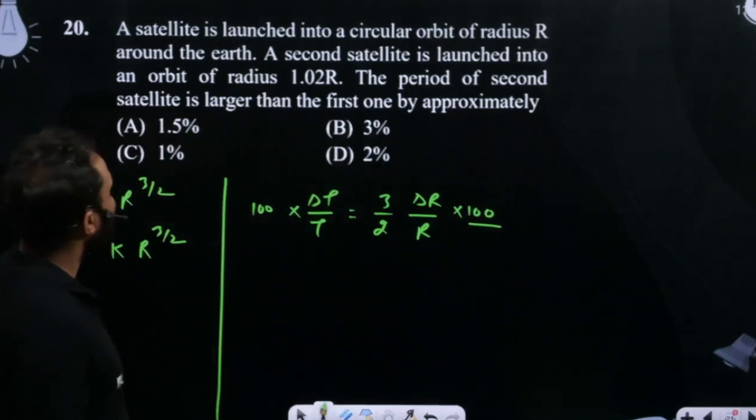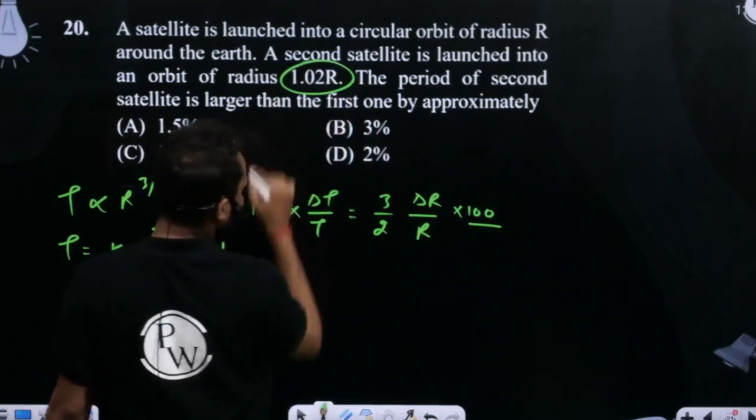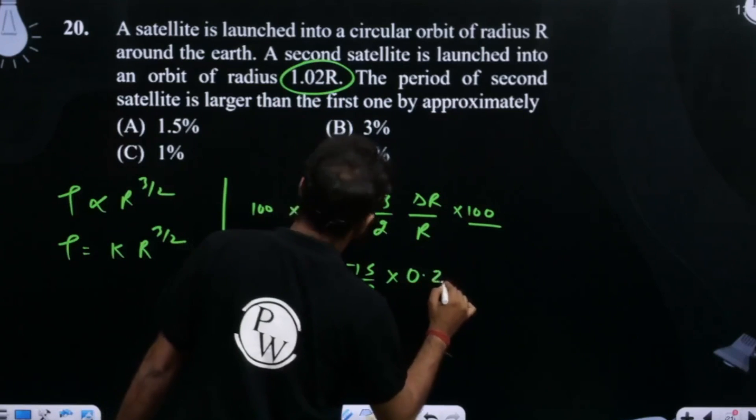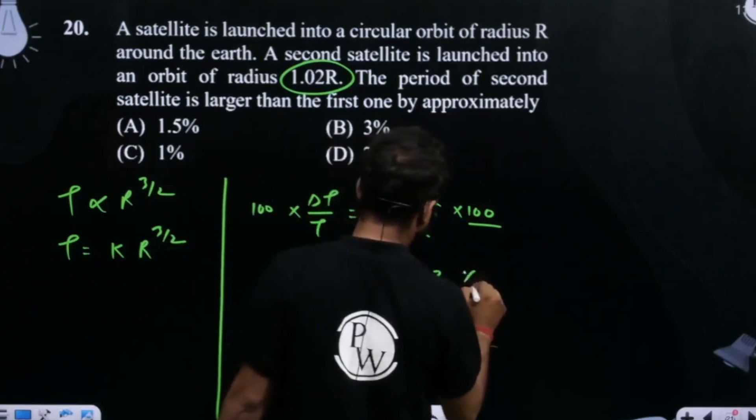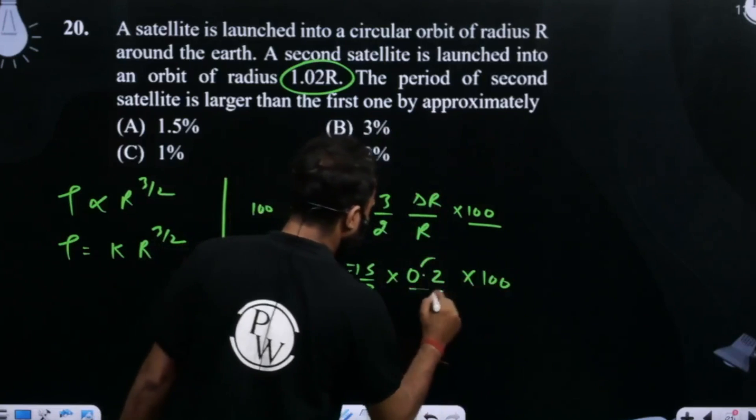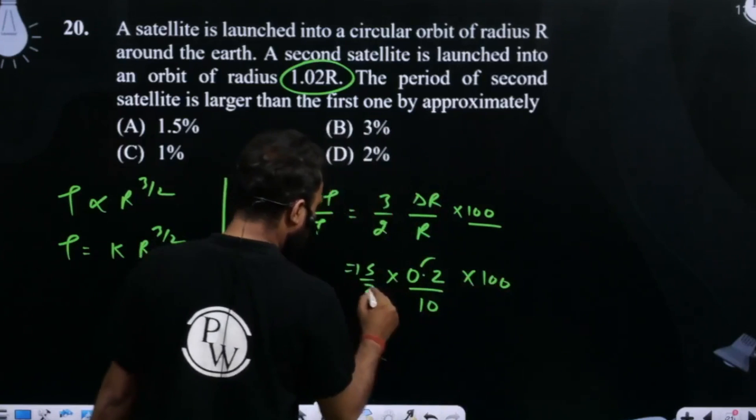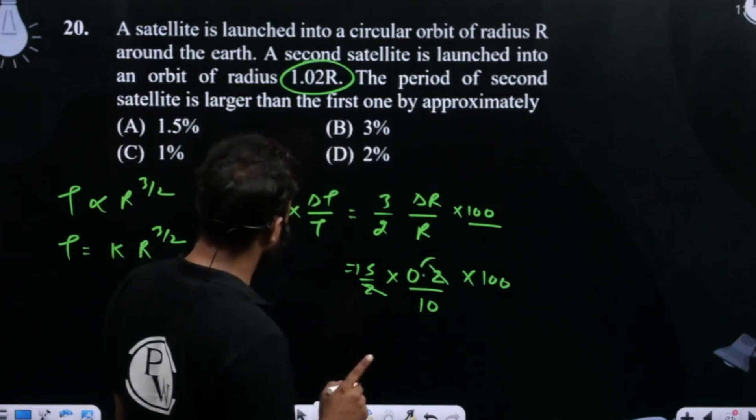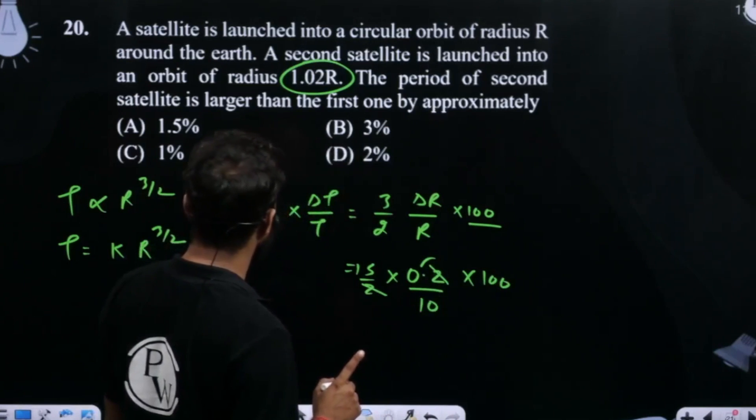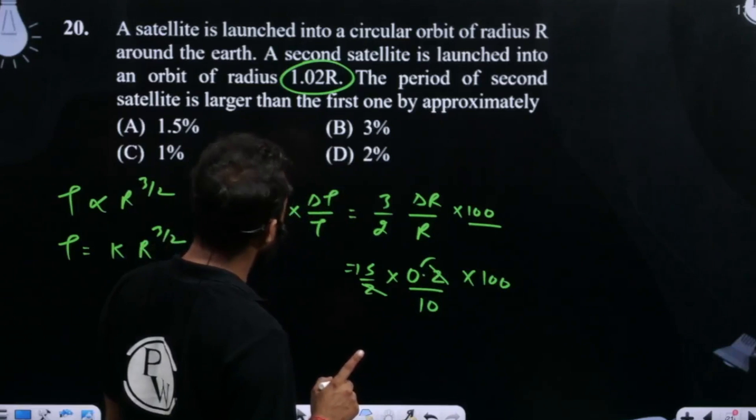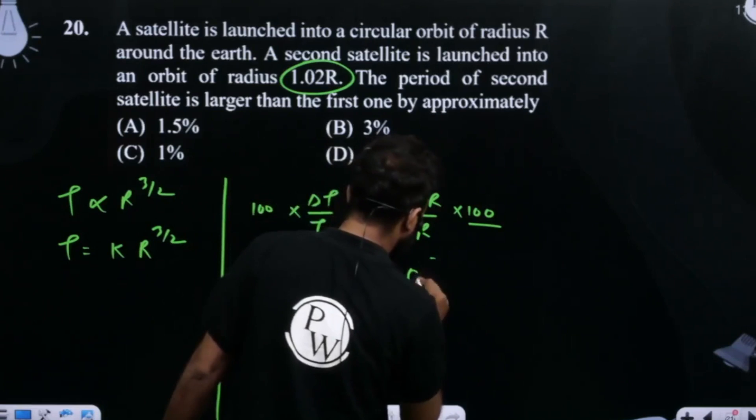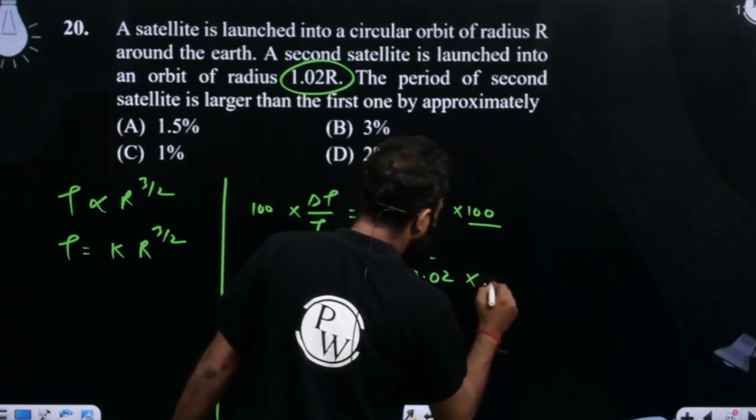Now, the change in radius, that change is nothing but 3 by 2 into... So basically this will come down here. Wait a second, I didn't make a mistake over here. Multiply by 100, 0.02, sorry, 0.02 multiply by 100.